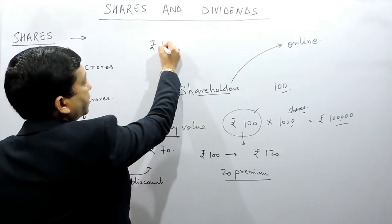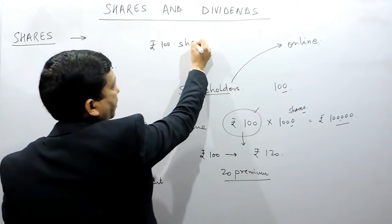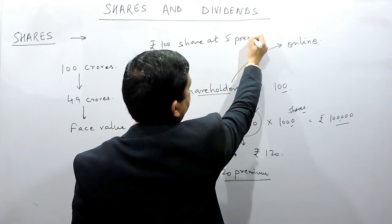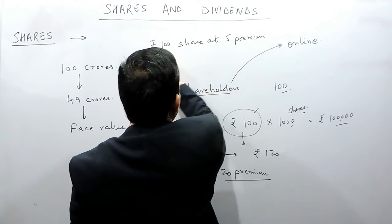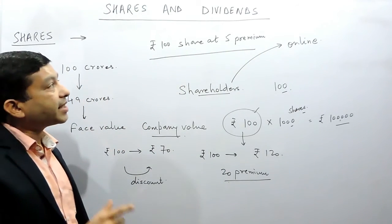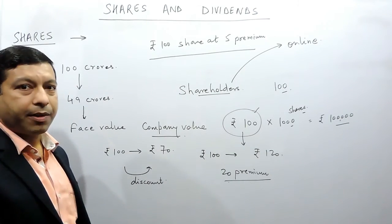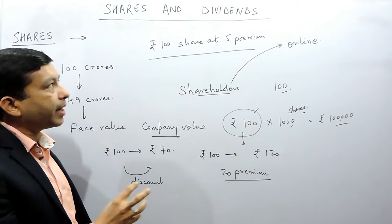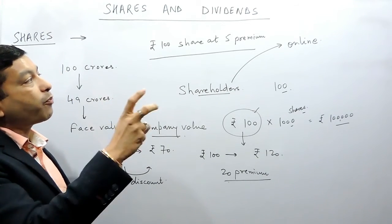Actually the meaning of this statement is that we are investing actually rupees 105 in the company, but the company will take rupees 100 as the investment and rupees 5 as the profit of that particular company.